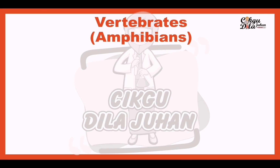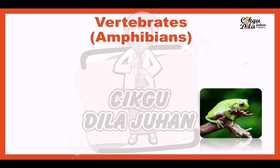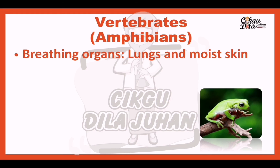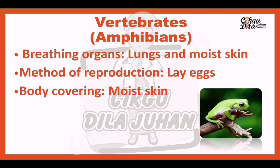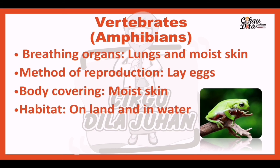The second type of vertebrate is amphibians. Amphibians breathe through lungs and moist skin. They reproduce by laying eggs. Their body is covered with moist skin, and they can live on land or in water.